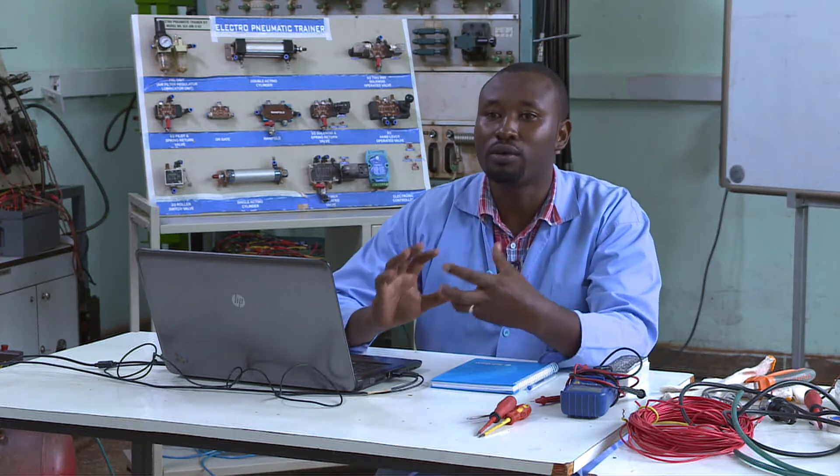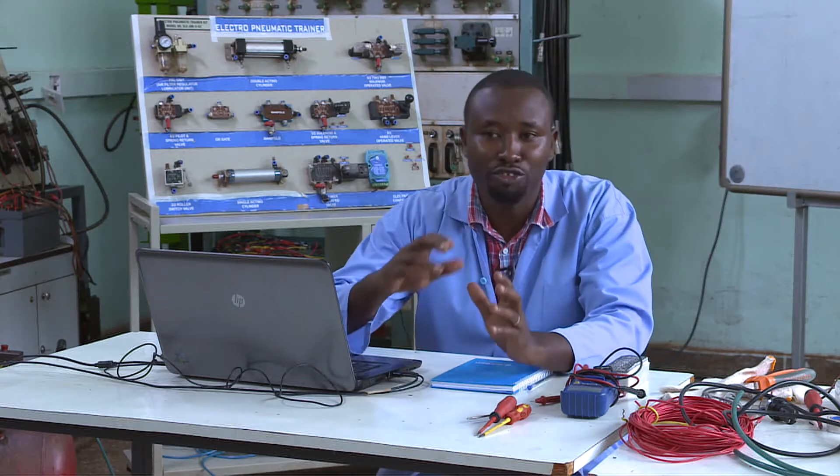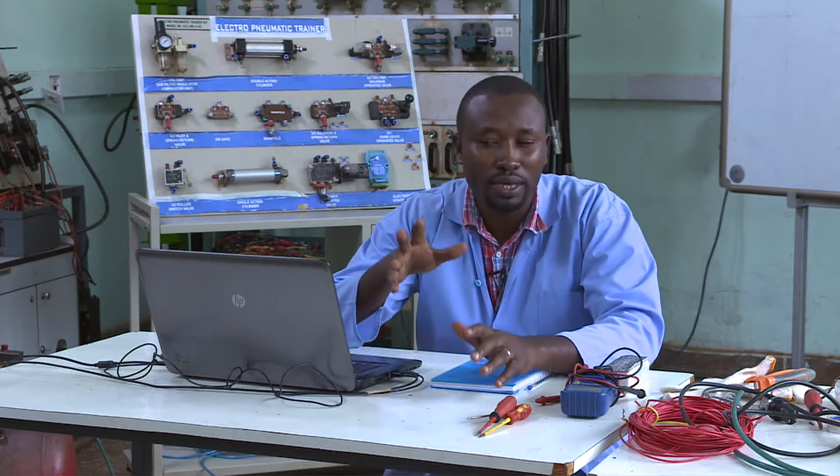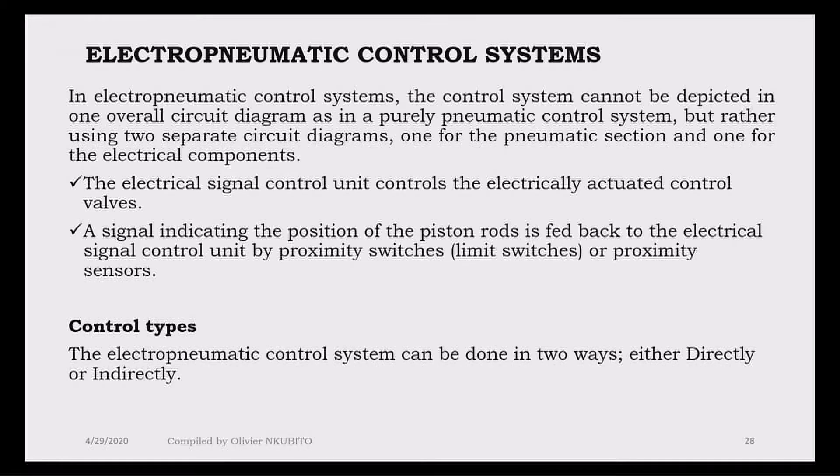Today we're going to integrate electrical control to pneumatics, which means electrical is going to be the control circuit and the pneumatics is going to be the power circuit. Why do we need to add an electrical system? It's because we need to make it easier. Using pure pneumatics there are some complications — some logic cannot be done — but using an electrical system we can make it easy and even maintenance will be easier.